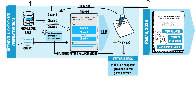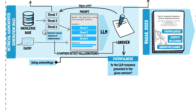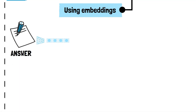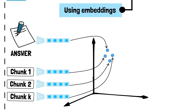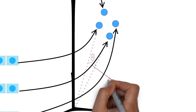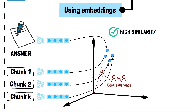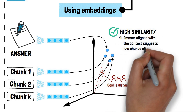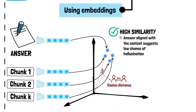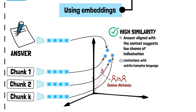Let's start with faithfulness. One way to assess this is by using sentence embeddings. We embed the generated answer and the context the LLM was given, then calculate the similarity between these embeddings, typically using cosine distance. If the embeddings are similar, it suggests that the answer generated by the LLM is similar in meaning to the context we provided. This method is simple, but it has limitations, especially when dealing with subtle or complex deviations in meaning.